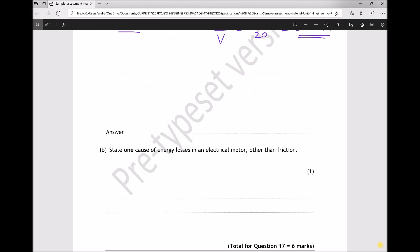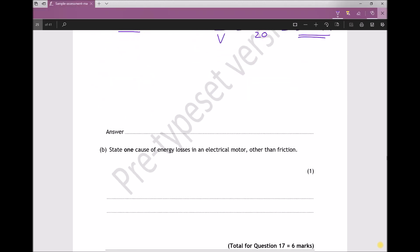Now part B of the question asks us to state one cause of energy losses in an electric motor other than friction. If we think about what makes up an electric motor, we have the stator, which is basically just a magnet, but more often than not that's actually going to be an electromagnet. So we'll have windings around the two magnets there.